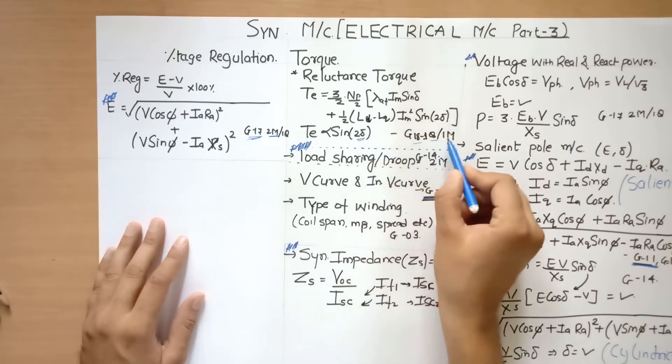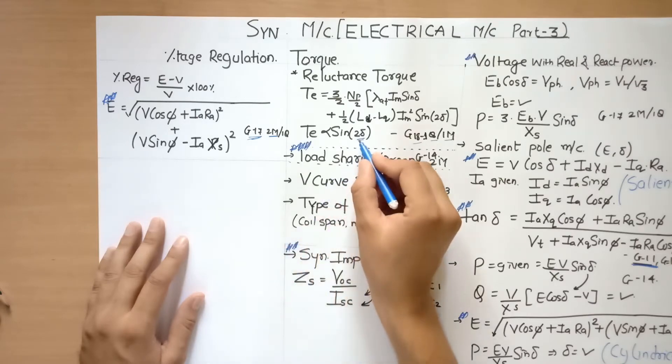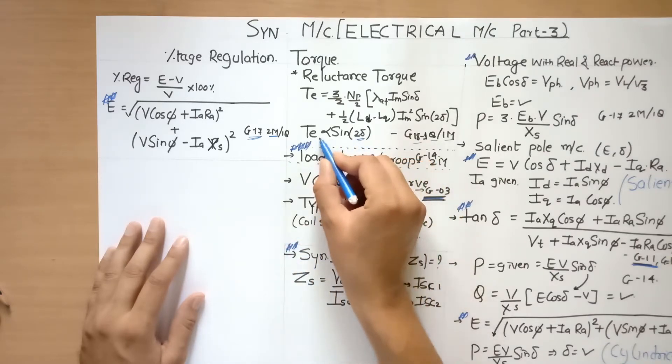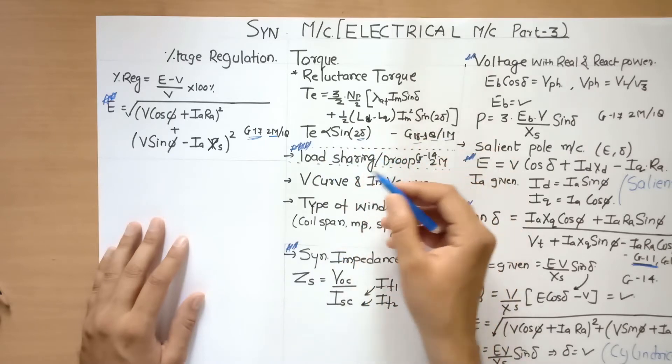In gate 2018, one question for one mark was asked based on this where delta was given and then torque had to be found out. Two deltas, two torques.